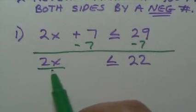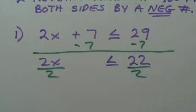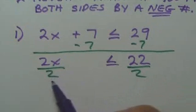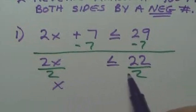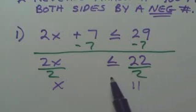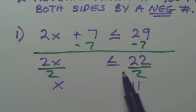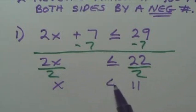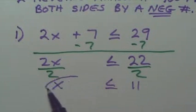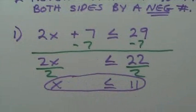To get rid of the two, I'll divide by two. Two goes into twenty-two eleven times. Do I need to reverse the arrow? All I did is divide by two — a positive number — so no, you don't have to switch the arrow. That answer's okay.